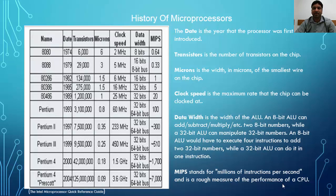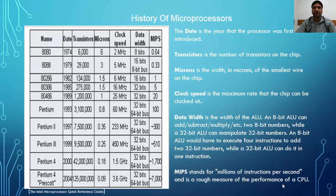An 8-bit ALU would have to execute four instructions to add two 32-bit numbers, while a 32-bit ALU can do it in one instruction. Over the years, it exceeded Gordon Moore's expectations, and today it is able to incorporate more than 125 million transistors on a single chip with a speed of executing more than 7,000 million instructions per second.